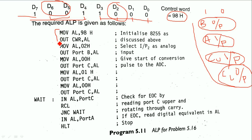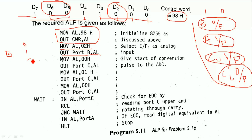These two instructions set the mode of operation of the 8255. Next, MOV AL, 02H followed by OUT Port B, AL — this sends 010 on Port B pins 0, 1, and 2, so analog input 2 is selected.